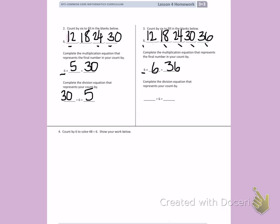Complete the division equation that represents your count by. My total was 36 divided by 6 equals 6. Number 4, count by 6 to solve 48 divided by 6. Show your work.